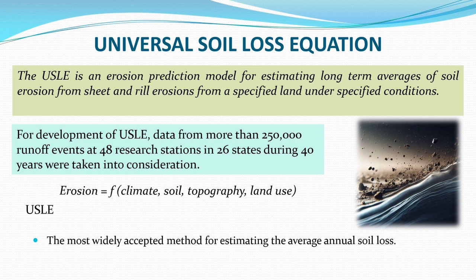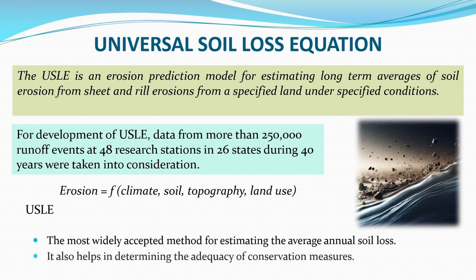The Universal Soil Loss Equation is the most widely accepted method for estimating average annual soil loss. It also helps in determining the adequacy of conservation measures — for example, if you have used berms or terraces or row crops, how effective are these conservation measures? You can estimate the soil loss under a particular condition using the USLE.